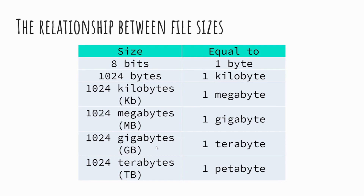At GCSE it's perfectly acceptable to say 1000 rather than 1024, and I would suggest using 1000 when doing the maths for any questions on this topic — it'll be far easier. In your exam you won't have a calculator, so rather than risk mistakes multiplying out 1024, just use 1000. For example, one gigabyte is made up of 1000 megabytes.